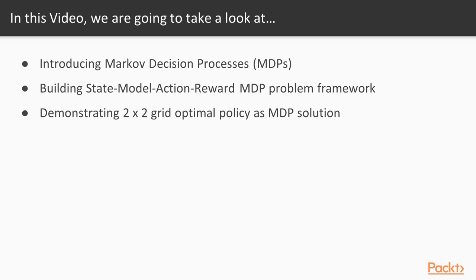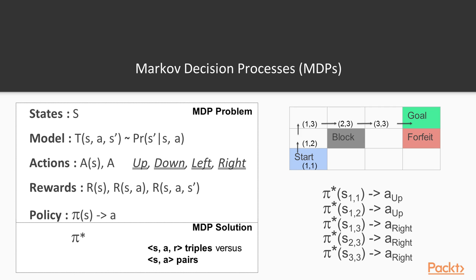We'll build the state action model reward framework, focusing really on the model. Then we will go into our extended R example, demonstrating the two-by-two optimal policy as an MDP solution. This slide encapsulates the important concepts of a Markov decision process.